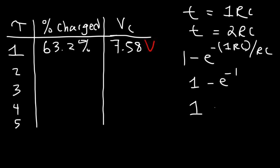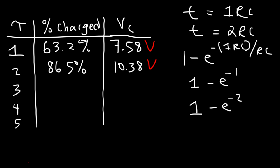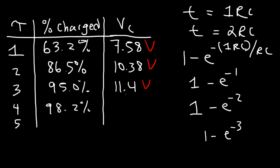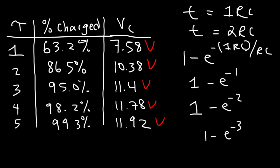After two time constants the voltage is 10.38 volts. After three time constants, 1 minus e to the minus three gives 0.95, or 95%, corresponding to 11.4 volts. After four time constants the capacitor is 98.2% charged, and after five time constants it is 99.3% charged with a voltage of 11.92 volts. So it takes about five time constants for a capacitor to be considered fully charged — approximately 99% charged at that point.